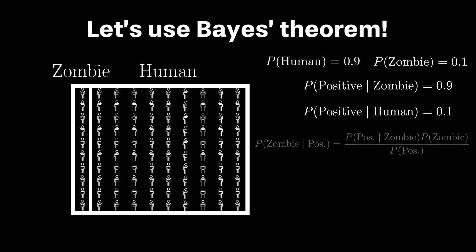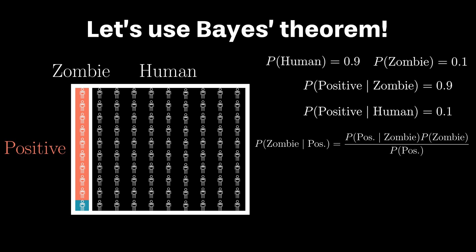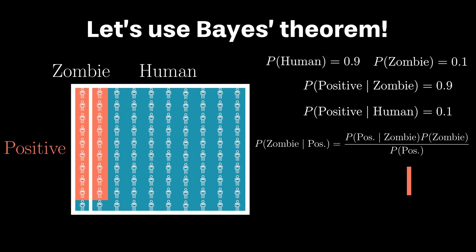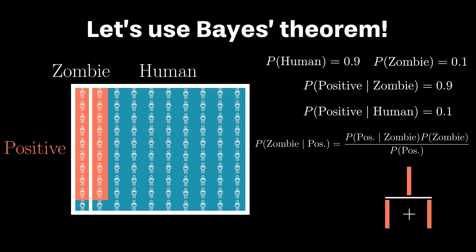Based on all of this, the government wants to know what is the chance that someone is a zombie based on a positive or negative test result. So let's work out the math via Bayes' theorem. Let's first work out the chance someone is a zombie given a positive test result, and let's understand the geometry of Bayes' theorem before filling out our equation. Out of 100 individuals, we would expect that 10 of them are zombies. Based on our test sensitivity, for 9 of those 10 individuals we should see a positive test result, while for 1 in 10 we should observe a false negative. Conversely, for the remaining 90 humans, we will observe a false positive for 10% of them, or a total of 9 people.